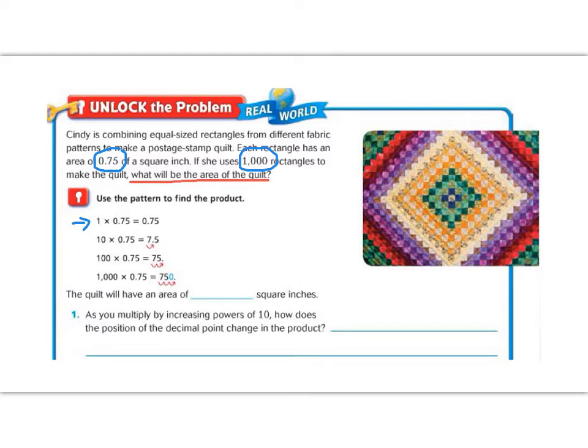But now look, if we multiply 0.75 by 10, our rule of adding a 0 on the end doesn't work because we have that decimal. So instead of adding a 0 on to the end, we're going to move this decimal from where it was, 0.75, to 7.5. So you can see that decimal moved over one place. So it's like we added a place value of 10, but we didn't actually add a 0. We just moved over one place.